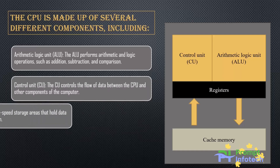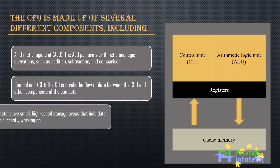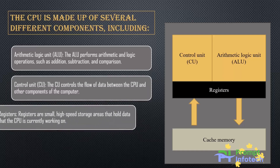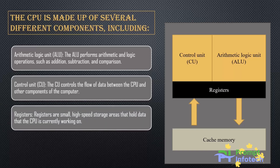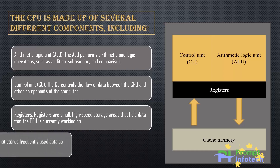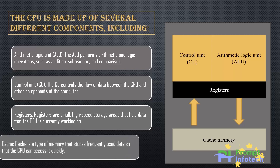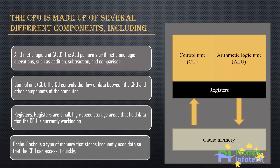Registers are small, high-speed storage areas that hold data that the CPU is currently working on. Cache is a type of memory that stores frequently used data so that the CPU can access it quickly.